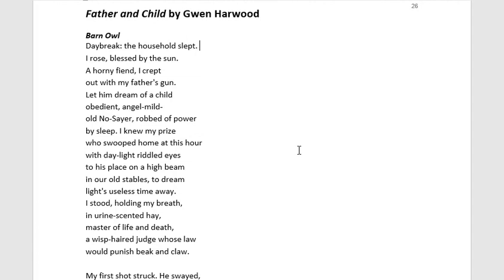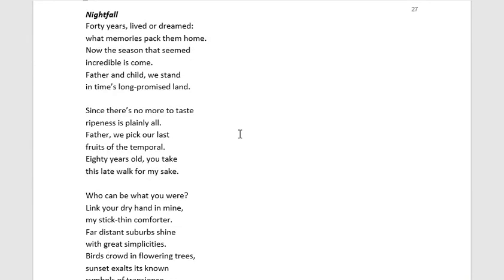This diptych also plays into the fact that the perspectives or voices we get are the father and the child — we can't have one without the other. It speaks to the interconnection of their bloodline and that very special relationship formed. Harwood uses the diptych structure to give contrast between innocence and maturity, allowing the audience to witness this timeless relationship. We must read the poem holistically, applying what we learn in Barn Owl to the storyline of Nightfall, because they interconnect.